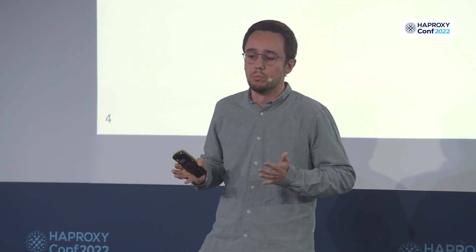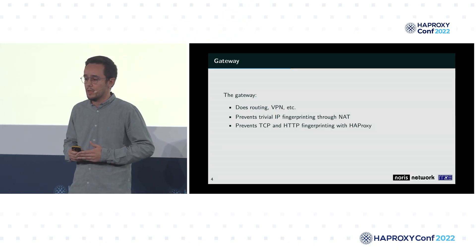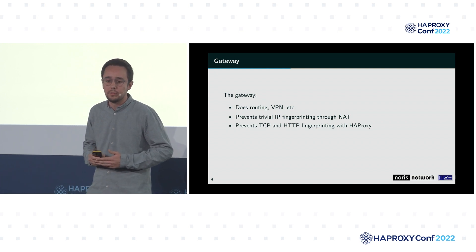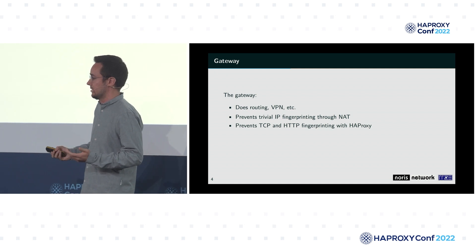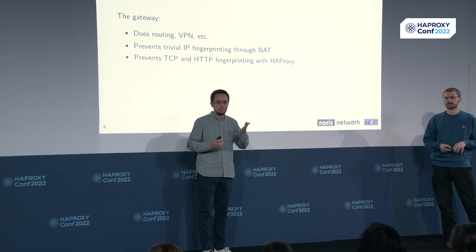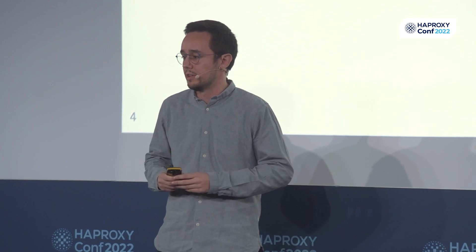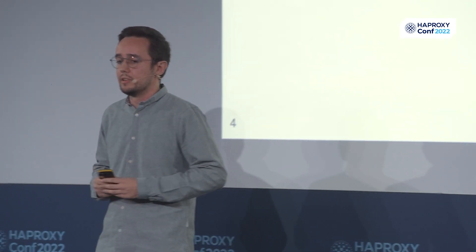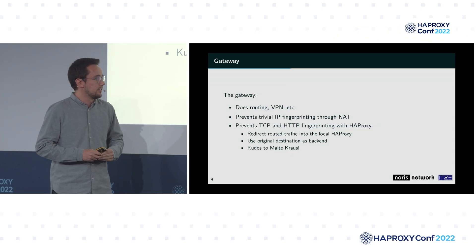After some iterations, we asked ourselves: can we do more? Can we prevent more kinds of fingerprinting? It was our former co-organizer Malte Krauss who came up with the idea to use HAProxy for that. I was personally very skeptical at first — isn't HAProxy just a reverse proxy load balancer? Yes, of course it is, but our use case is really different. We want to redirect traffic to any destination, do our anonymization, then pass it on to its original destination.